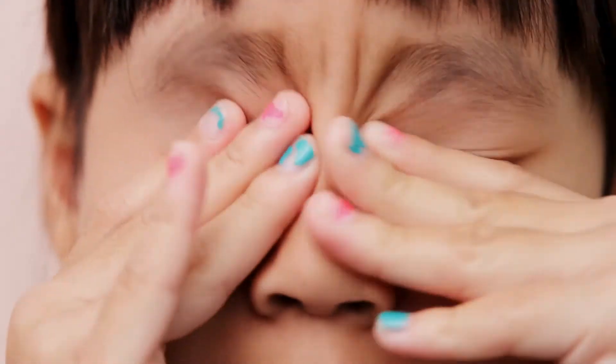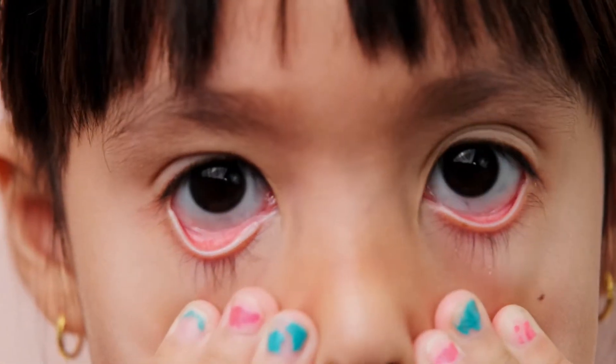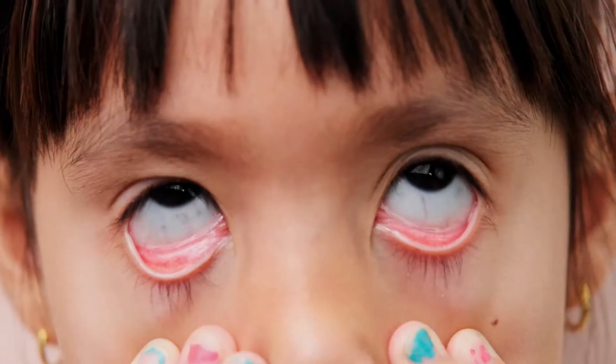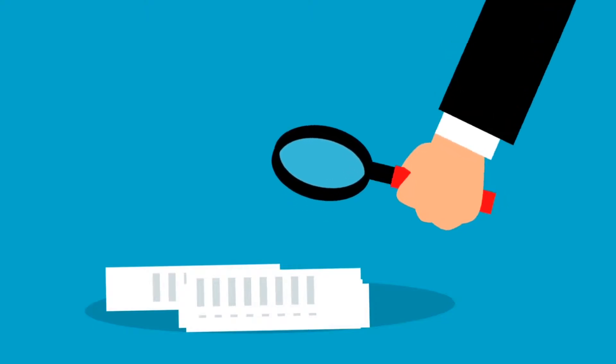Have you ever wondered what color the inside of your eyelids are? They are pink. Now, close your eyes. Do you see the color pink? No, you only see darkness or the color black. Why is that? Let's explore.